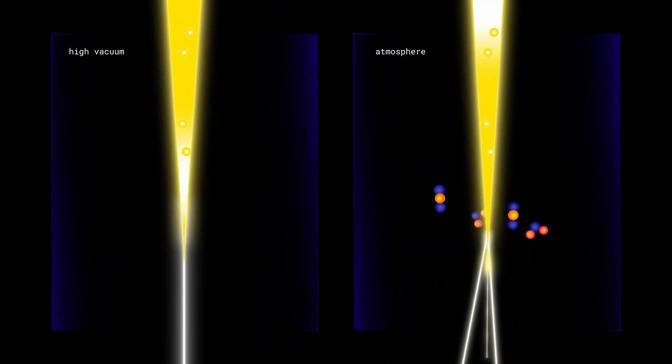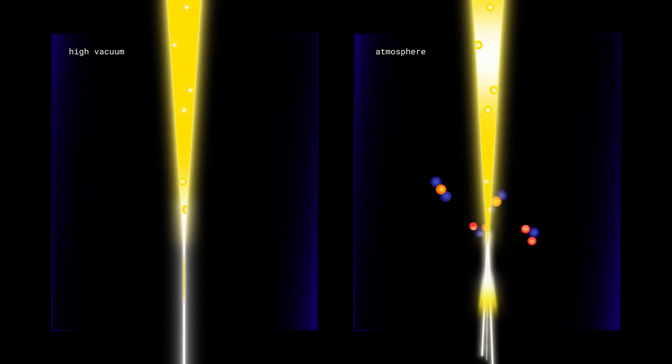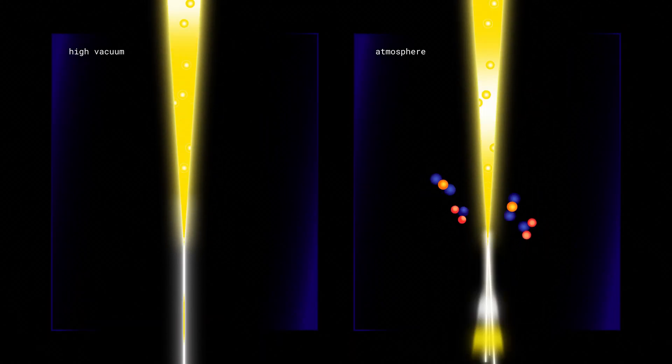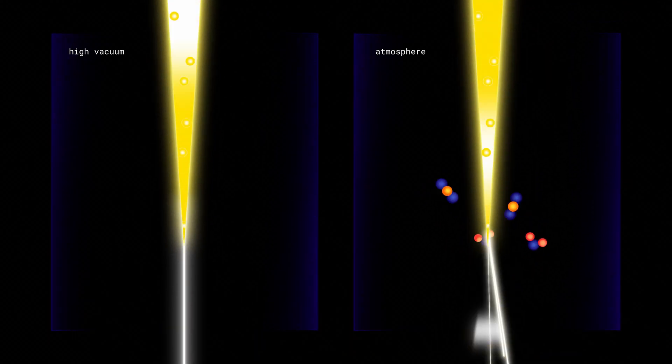This is important as scattering or attenuation of electron beam will increase the spot size of the beam and reduce resolution, especially in the secondary electron mode. The high vacuum condition also optimizes collection efficiency of the secondary electrons.